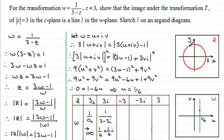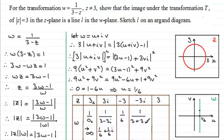When Z equals minus 3 we get 1 over 3 minus (minus 3), which is 1/6. When Z equals minus 3i, we get 1 over 3 plus 3i, and multiplying top and bottom by the complex conjugate 3 minus 3i gives 1/6 minus (1/6)i. That complex number is the point down here on the line.